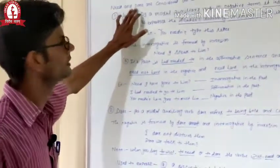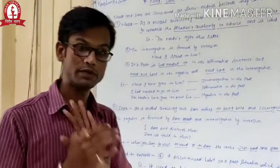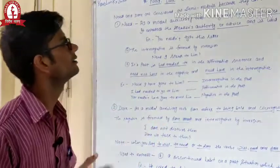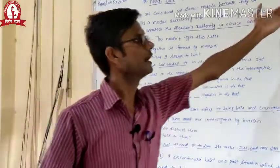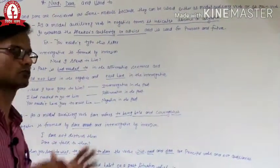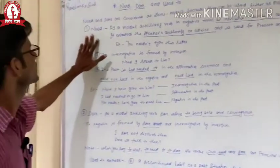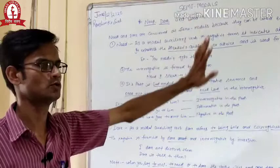So here you can see, need and dare are considered as semi-modals because they can be used either as modal auxiliary verbs or as main verbs. Further, we will discuss need and dare, and after that used to.